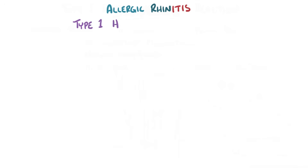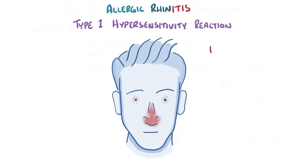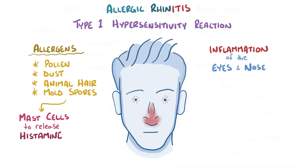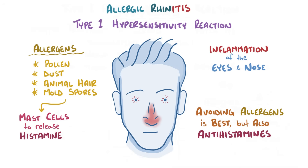As a quick recap, allergic rhinitis is a type 1 hypersensitivity reaction which results in inflammation of the eyes and nose. Airborne allergens like pollen, dust, animal hair, or mold spores cause mast cells in the tissues to release histamine, causing the eyes and nose to get inflamed and watery. Avoiding allergens is the best approach, but it's also possible to use antihistamines and in severe cases try desensitization to reduce or eliminate the symptoms.